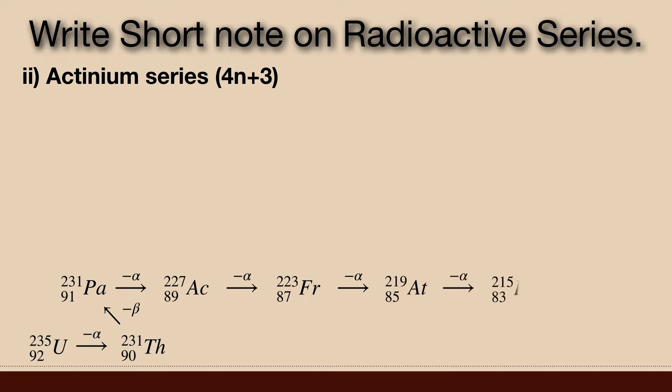Actinium, astatine, bismuth, francium, lead, polonium, protactinium, radium, radon, thallium and thorium. All are present in the sample containing uranium 235. This series terminates with the stable isotope of lead 207.